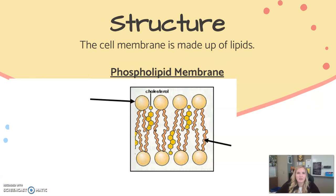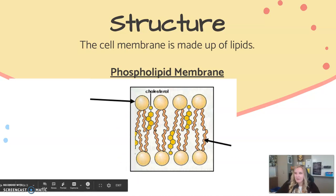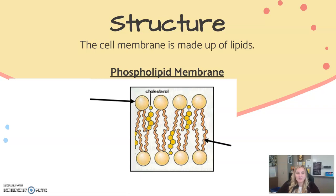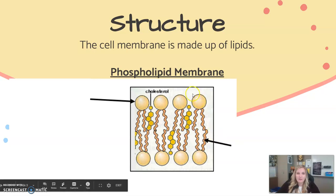Now what does it look like? The cell membrane is made up of lipids — remember we talked about lipids in our last unit? Lipids are fats, so your cell membrane is made up of fats. This is the phospholipid membrane, which means it has two layers of membranes with their heads on one side and their tails on the inside.